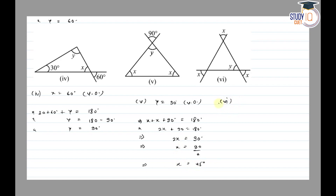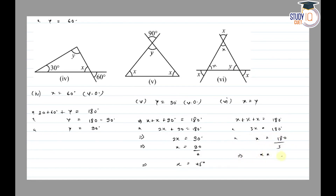For question 6, x is a vertical opposite angle, and similarly y is a vertical opposite angle, so x is equal to y. Using the sum of all interior angles equal to 180 degrees, x plus x plus x equals 180 degrees, so 3x equals 180, giving x equal to 60 degrees. Therefore both x and y are equal to 60 degrees. Thank you.